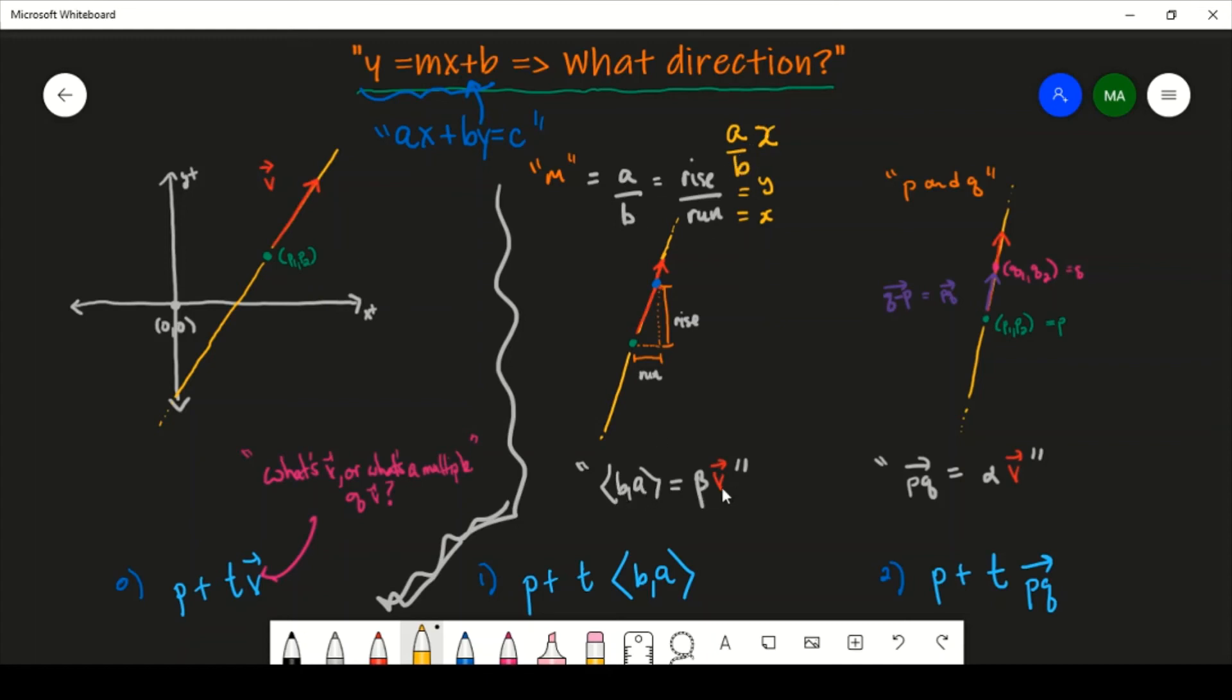And so here we go. So B A is a multiple of our line's direction. And so here goes a vector equation for our line.